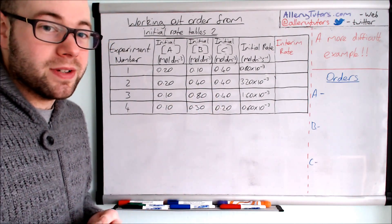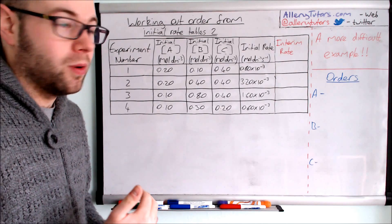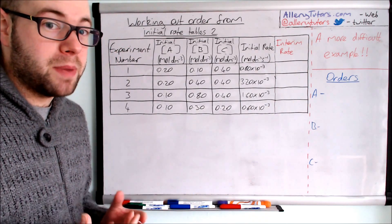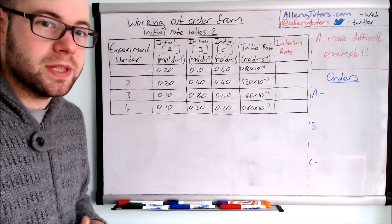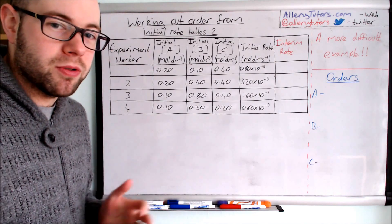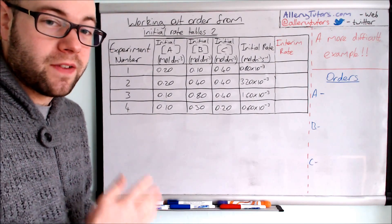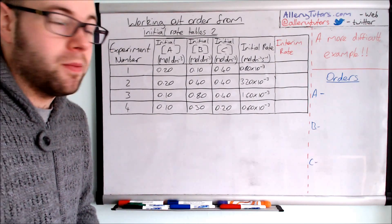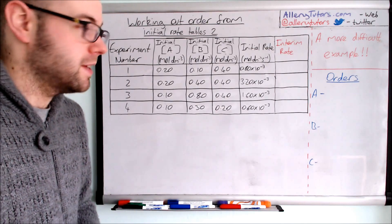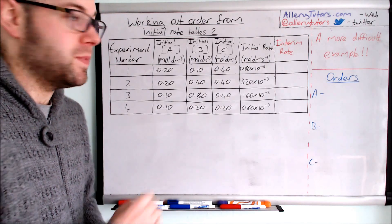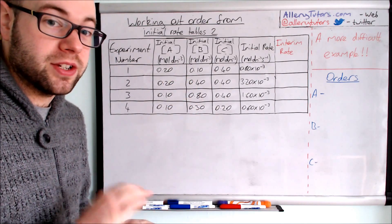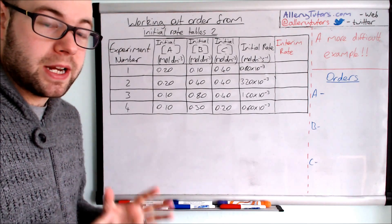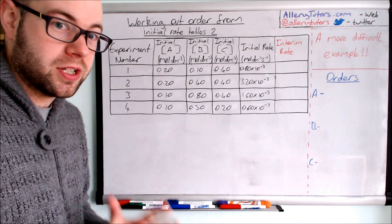We're actually not going to do it in the traditional order whereby we work out A first. We're actually going to work out B first. You don't have to do them in this particular order, but the crucial thing is to find one where one reagent concentration has been changed but the other two remain constant, because that's what you need to get started really.